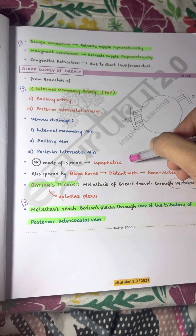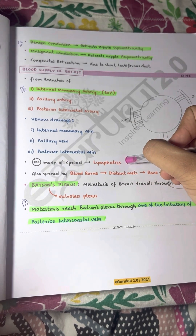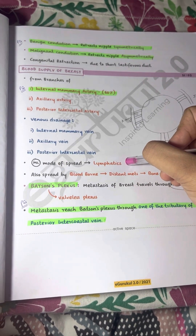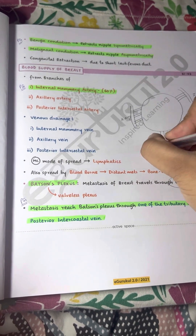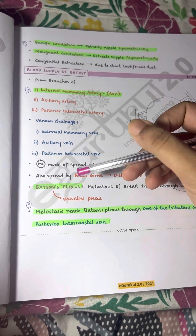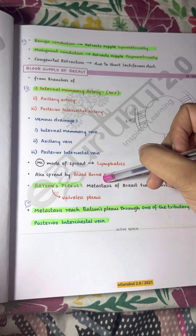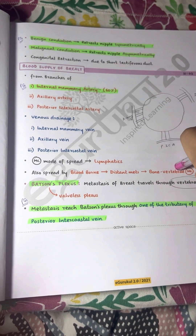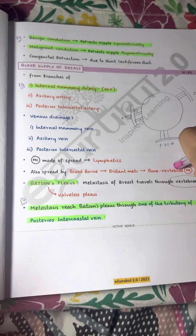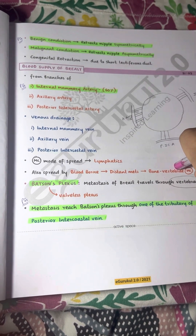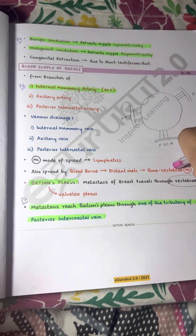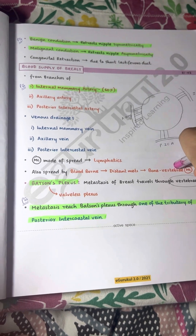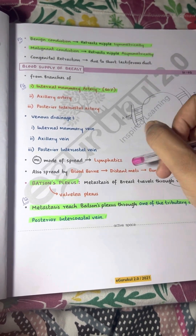The most common mode of spread of breast cancer is via the lymphatics. It also spreads by blood-borne distant metastasis, with bone being the most common site. Specific bones involved include the lumbar vertebrae, femur, and thoracic vertebrae.